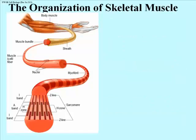Here we have a muscle bundle, which is basically the muscle that you would give a name, like biceps. The muscle is surrounded by a membrane or sheath, and inside the sheath is this bundle of muscle cells called myofibers. Myofibers are actually multinucleate — a muscle cell, a muscle fiber, with multiple nuclei. A cell with multiple nuclei is called a syncytium.